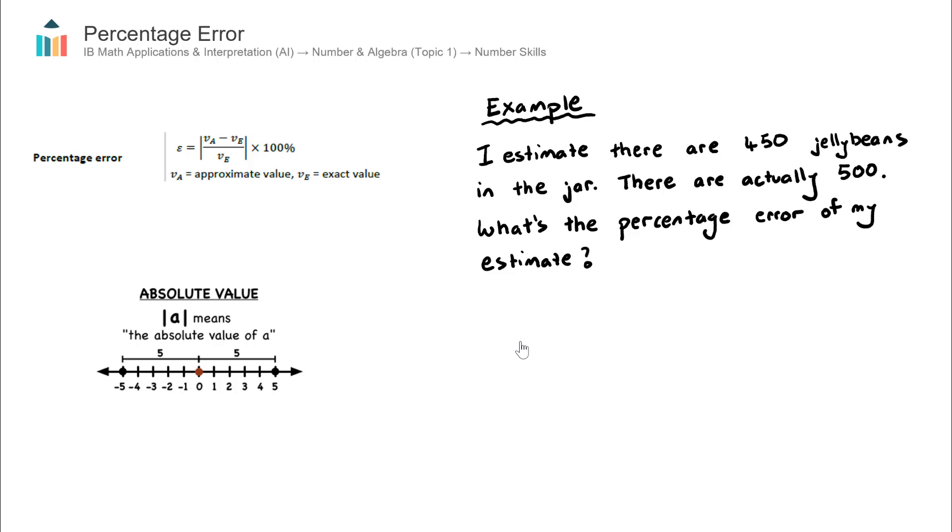Let's work through this formula. The symbol for percentage error is this epsilon symbol, that's a Greek letter. The percentage error is equal to, and I have these vertical lines here you can see in the formula. Just to emphasize, this formula is in your AI formula booklet.